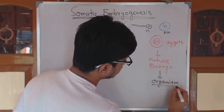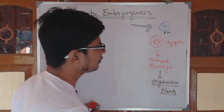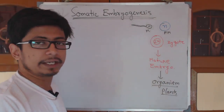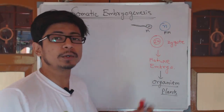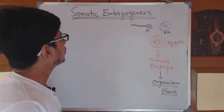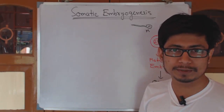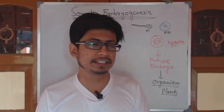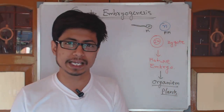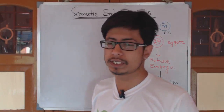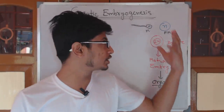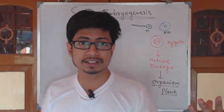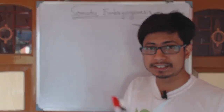If we're talking about plants, this process gives us a plant. This is general embryogenesis, also known as zygotic embryogenesis. Now, somatic embryogenesis is our topic. There are two types of cells in our body: germline cells and somatic cells. Germ cells are haploid, and embryogenesis involving germ cells is known as zygotic embryogenesis.